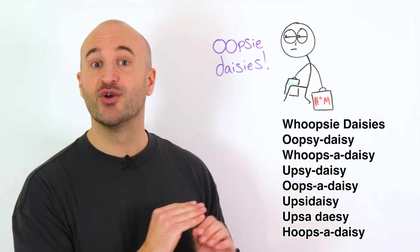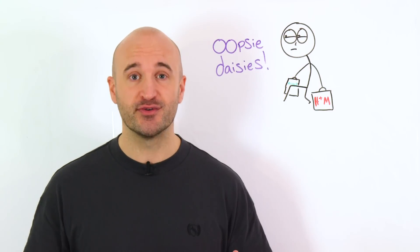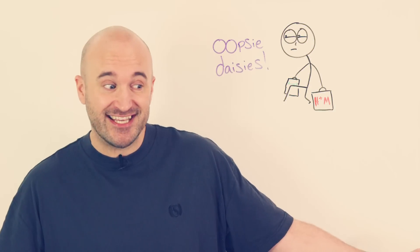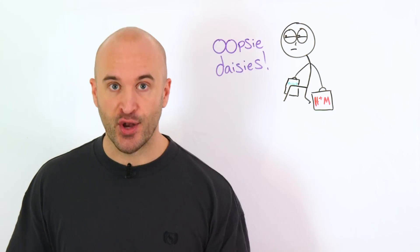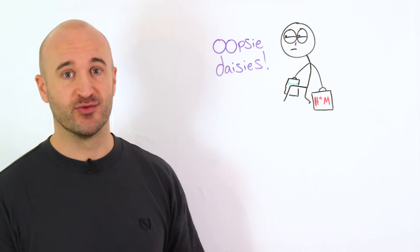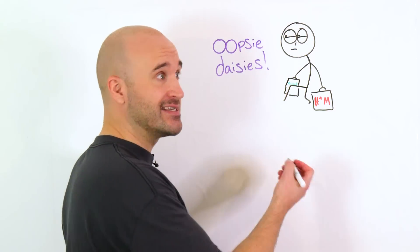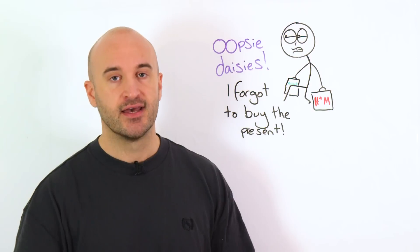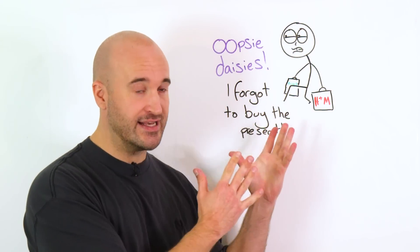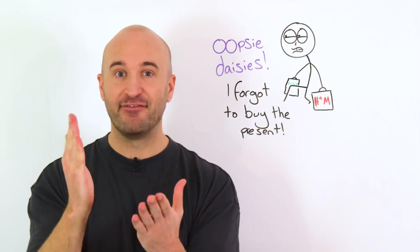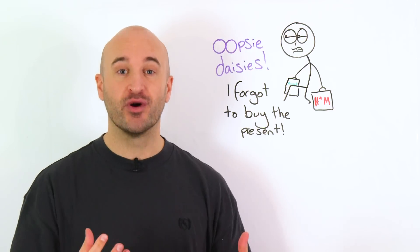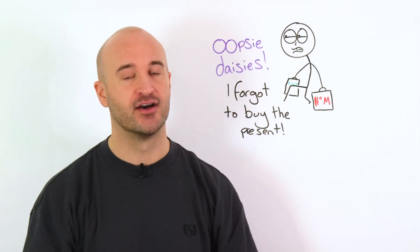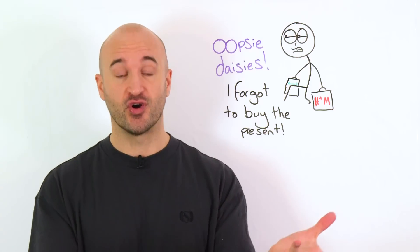It's a stupid expression that we all say, but if you spell it wrong, no one cares. Don't use this for a serious situation like, whoopsie daisy, I ran over your cat. No, just silly, casual situations like, whoopsie daisies. I forgot to buy the present. Again though, you would only say this with a child. If you're alone as an adult and you want to say something stronger, you'll probably just say something stronger.